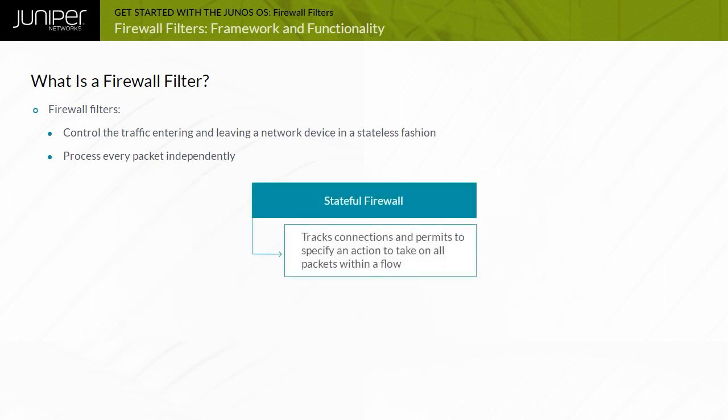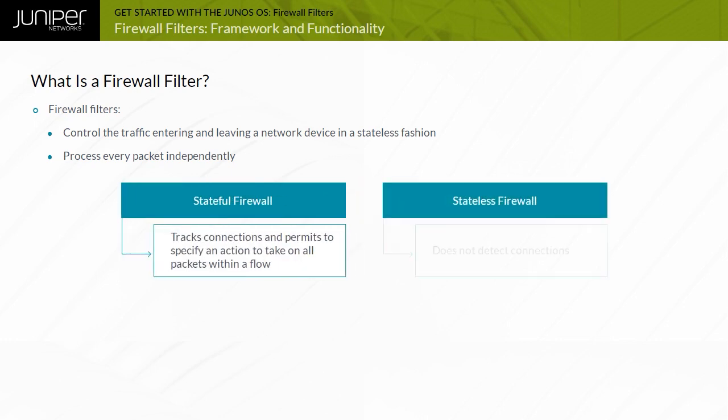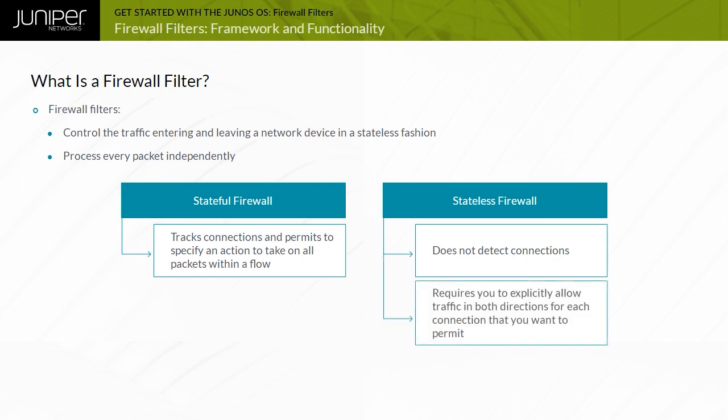Unlike a stateful firewall that tracks connections and permits you to specify an action to take on all packets within a flow, a stateless firewall filter does not detect connections. Because the system does not keep state information about connections, you must explicitly allow traffic in both directions for each connection that you want to permit.